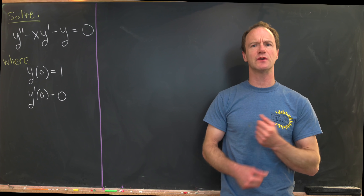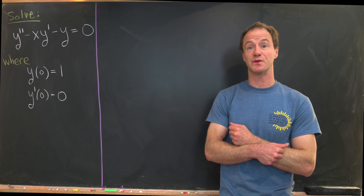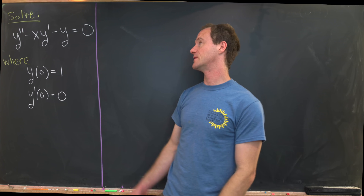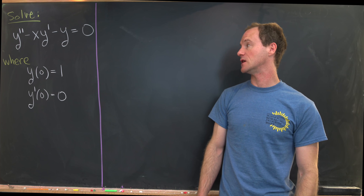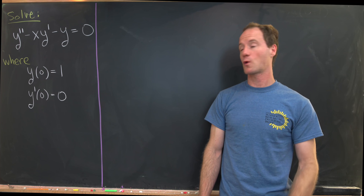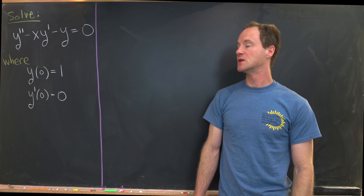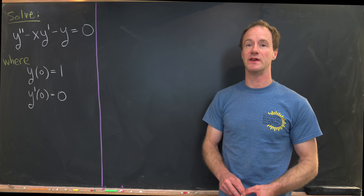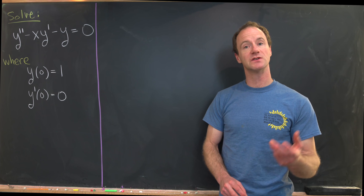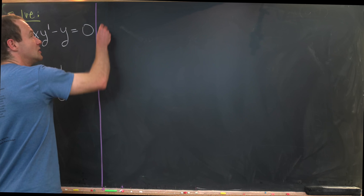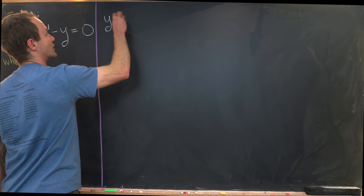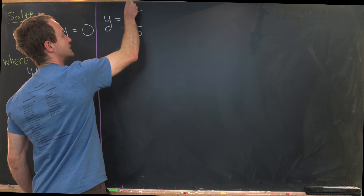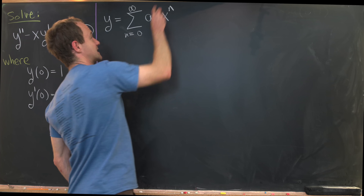Here we're going to solve a nice differential equation using one of my favorite strategies, which is with a series. The differential equation we are interested in is y double prime minus x times y prime minus y equals zero. We're going to look for a series solution, which means we start with y equal to the sum as n goes from zero up to infinity of aₙ times x to the n.